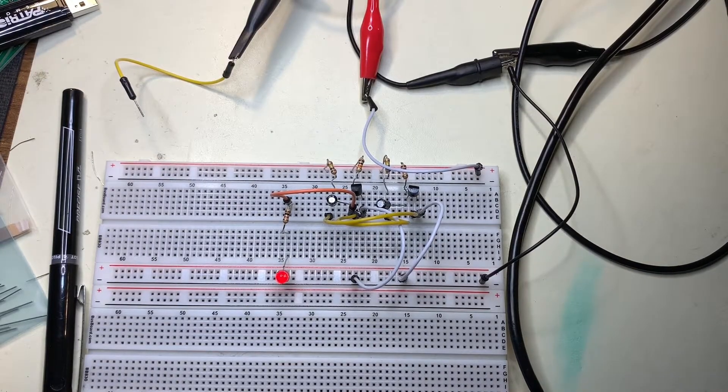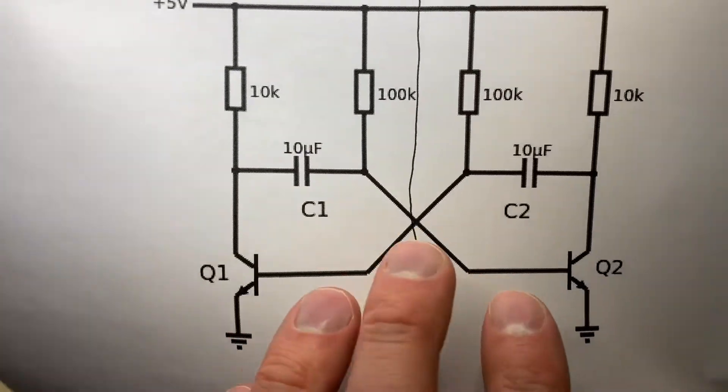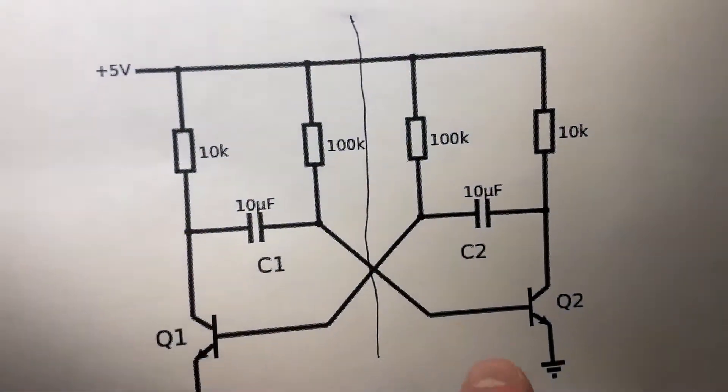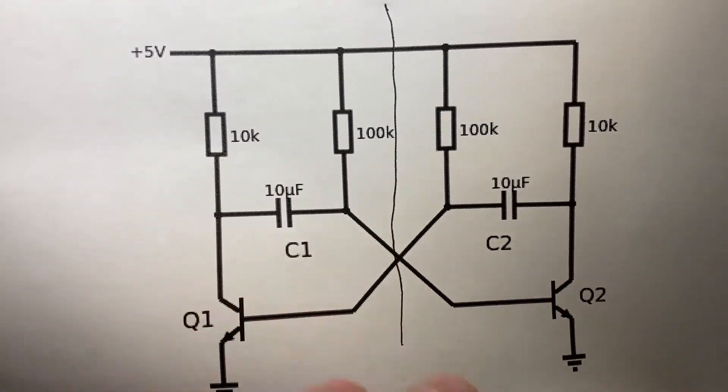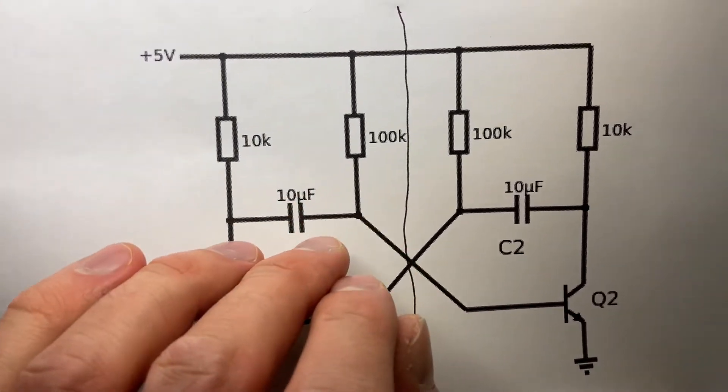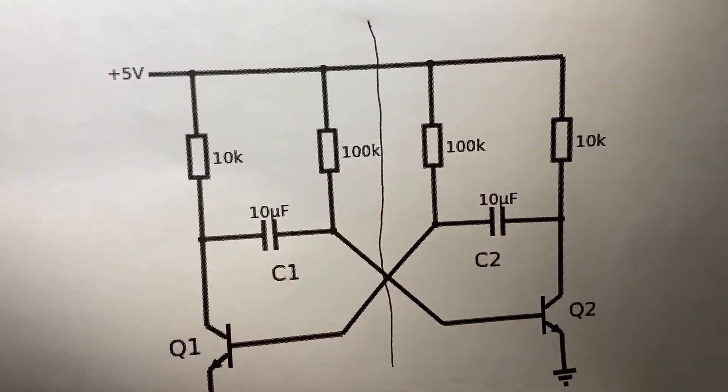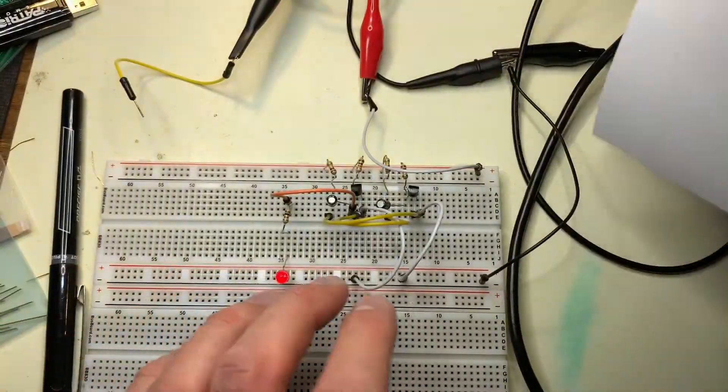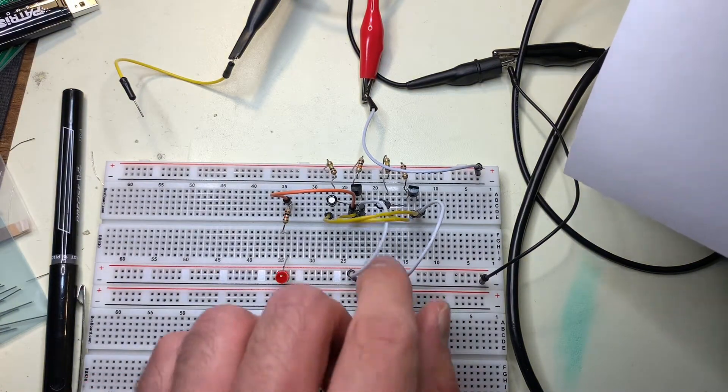One thing to note about this circuit is that the values in here, the values on this schematic right here, are the actual values on this board. But if you for some reason don't have exactly these components or can't find them, you can replace these values with other value components, and basically all it will do is it will change the characteristics of the signal coming out of this.